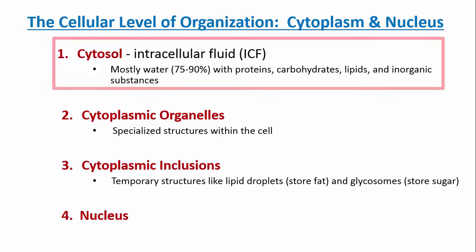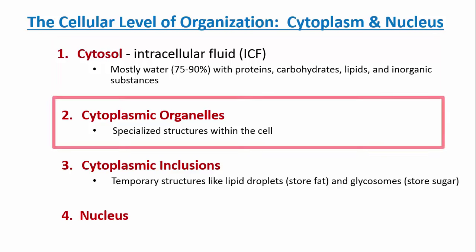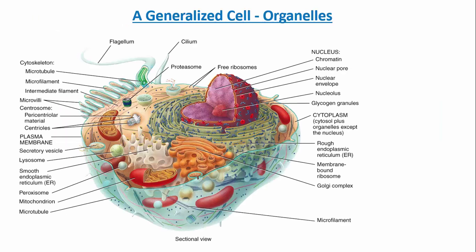The second thing we want to focus on is a category termed cytoplasmic organelles. These are specialized structures within the cell that do something. Whenever we talk about an organelle, it's a broad category — a membrane-bound structure inside the cell that has some specialized or specific function. Let's go ahead and take a look at a few of these.